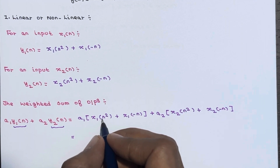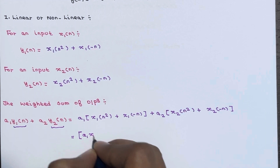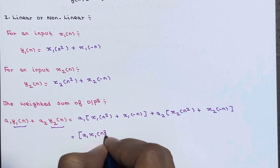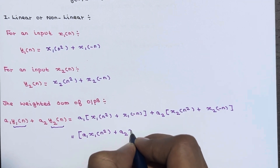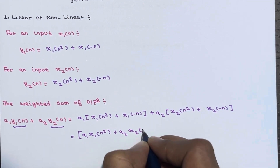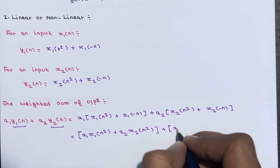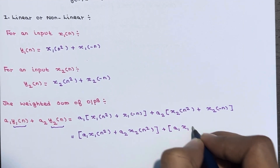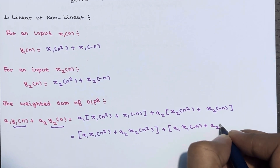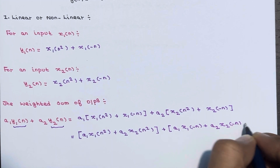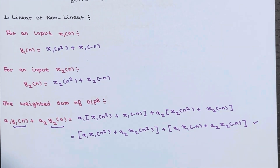Evaluating this, I will take the squared terms to one side. So it becomes a1 times x1 of n squared plus a2 times x2 of n squared, plus a1 times x1 of minus n plus a2 times x2 of minus n. This is the weighted sum of outputs.